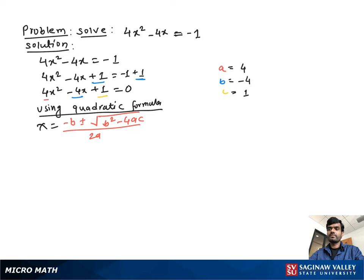Using the quadratic formula, x = (-b ± √(b² - 4ac)) / 2a. Substituting the values, we get x = (4 ± √((-4)² - 4(4)(1))) / (2(4)).